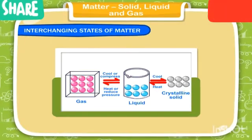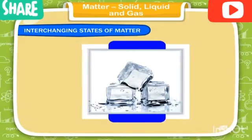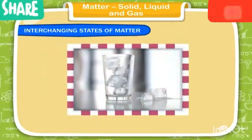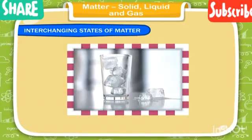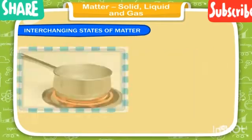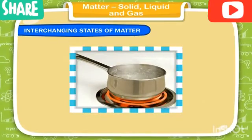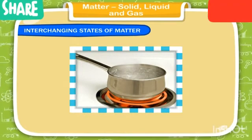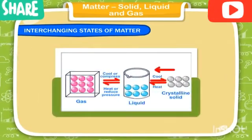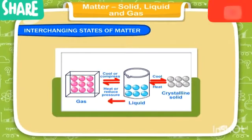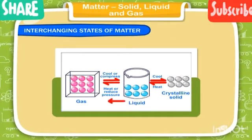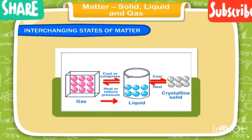Matter can change its state. Take out a few ice cubes (solid) from your fridge and put them in a pot. Leave the ice cubes for a few minutes — they convert into water (liquid). Now boil this water; after a few minutes the water converts into steam (gas). Thus a solid can be converted into a liquid, and a liquid into a gas.